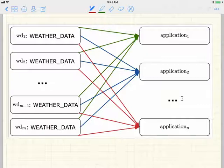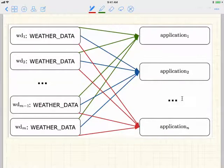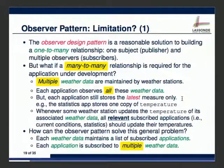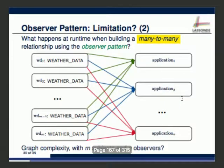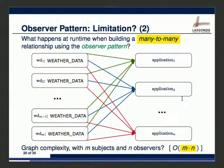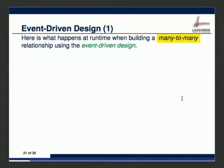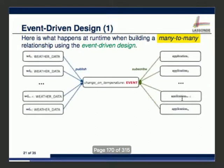So that's the complexity of links we have to maintain at runtime — big O of N times N. That's the limitation of the observer pattern for many-to-many relationships. What we really want is event-driven design. Let me show you the diagram first.